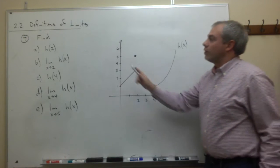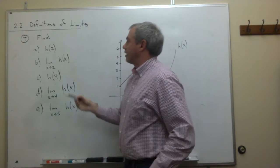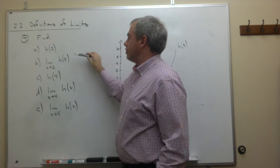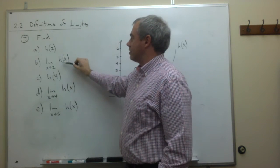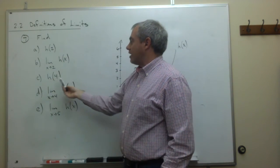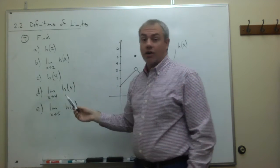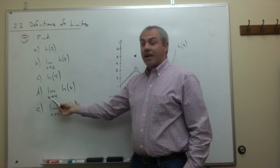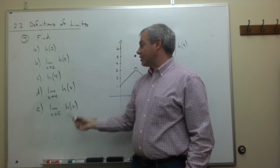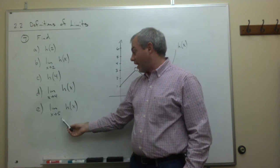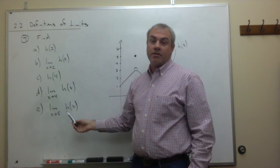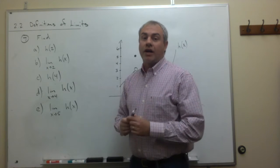Given this function we have right here, h of x, we want to find five different things. We want to find what's h of 2, what's the limit as x goes to 2 of h of x, what is h of 4, what is the limit as x goes to 4 of h of x, and what's the limit as x goes to 5 of h of x.